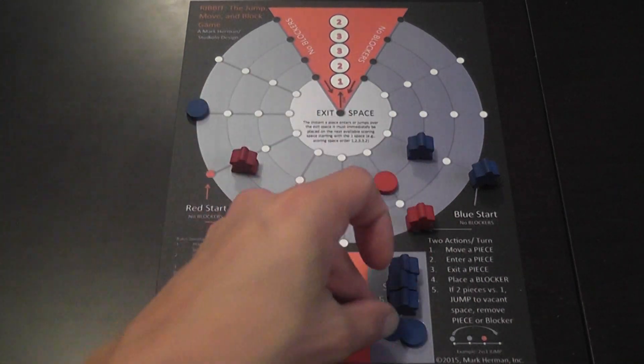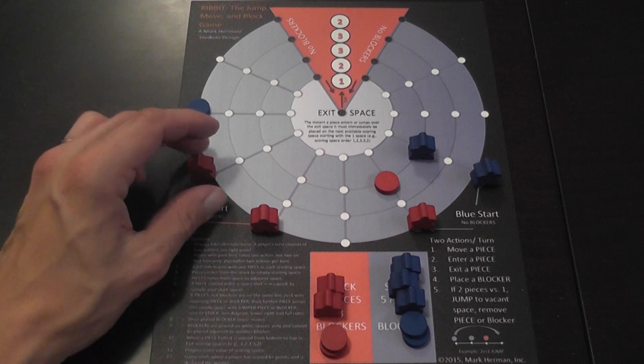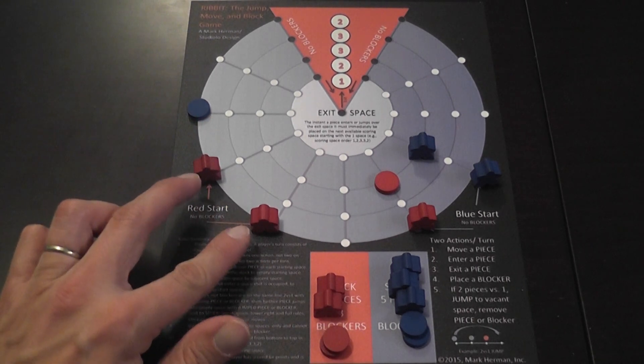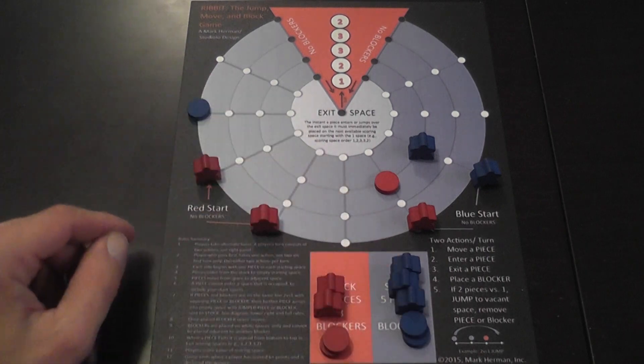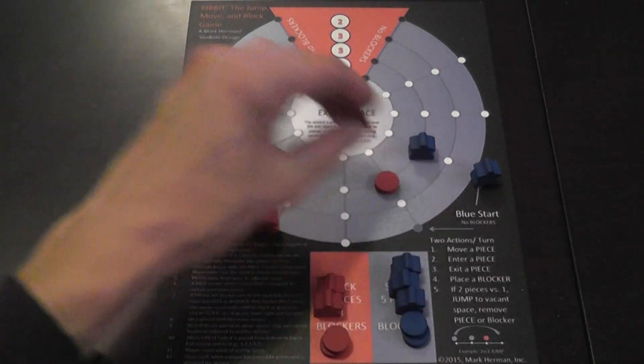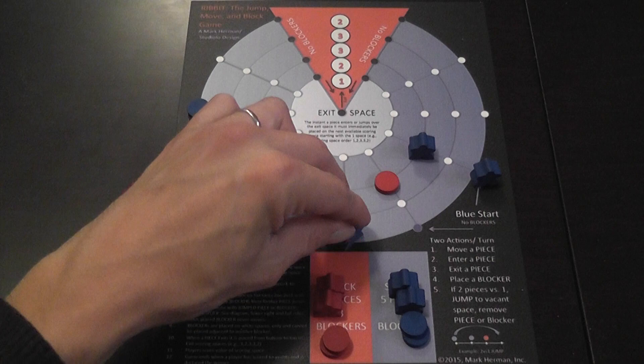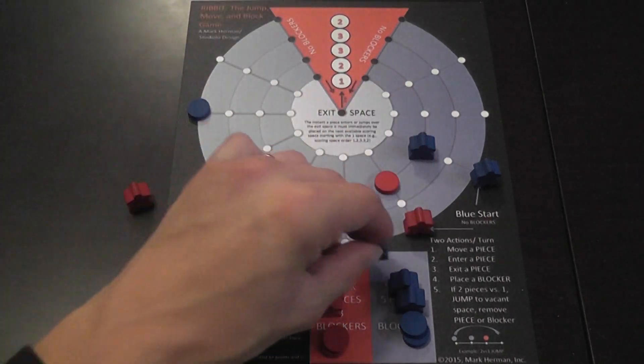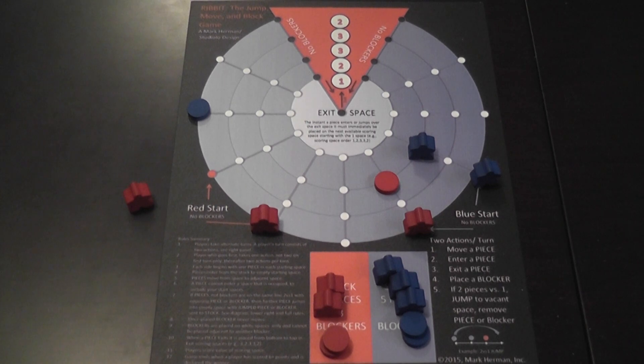However, in order to jump you need to have two of your pieces, two of your meeples in a line. You can't use a blocker as one of the two parts that you use for a jump. As simple as that. When you jump an enemy piece, like in this case, the enemy is removed. Super simple. This is pretty much the game.